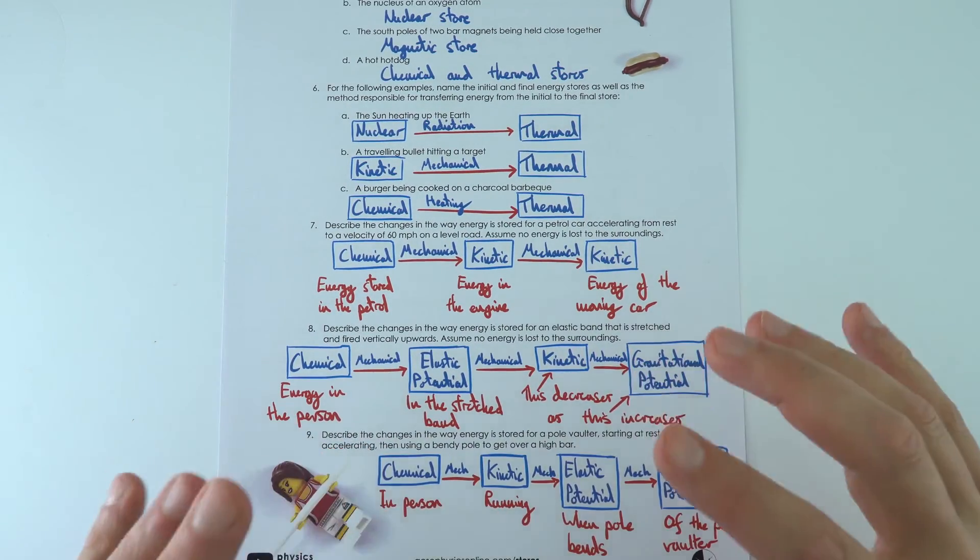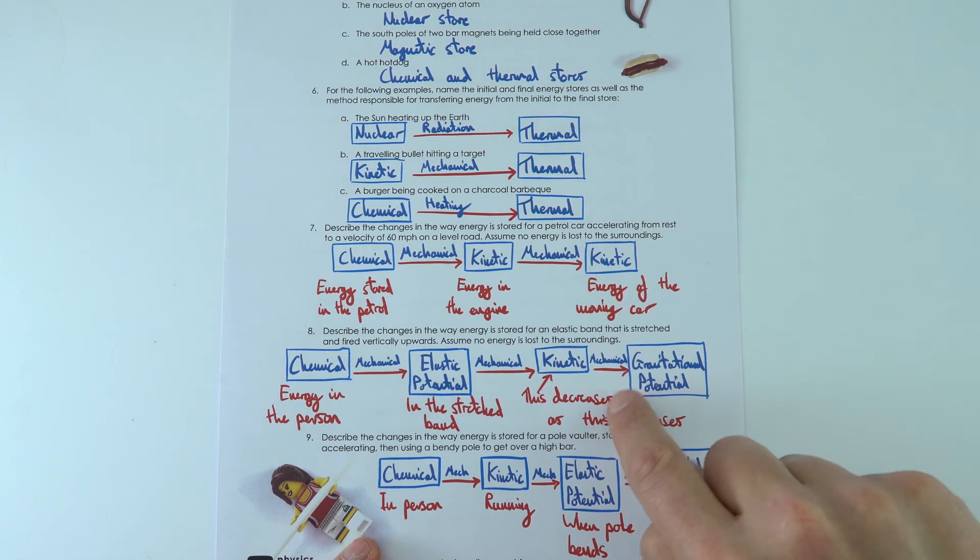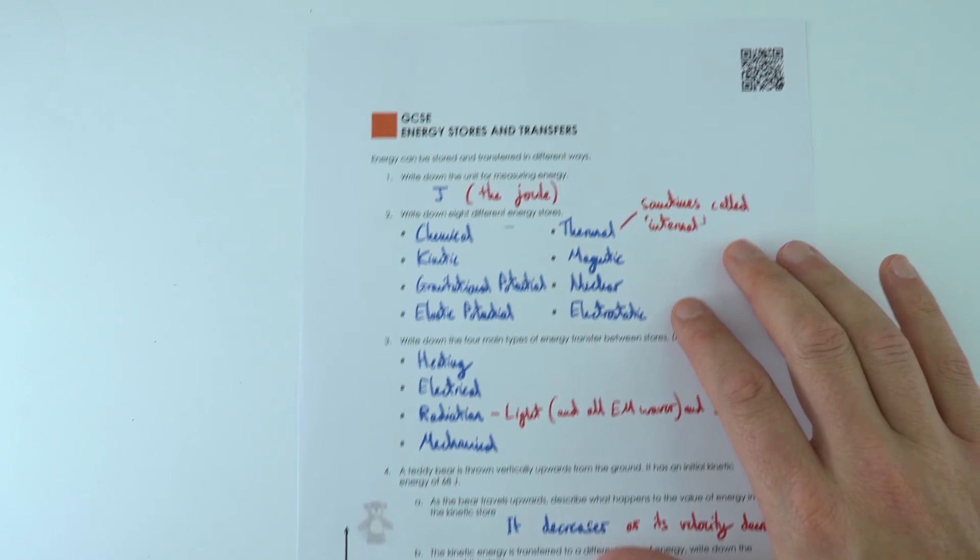So this one over here, it can get a bit confusing, but I just thought I'll keep it simple. I'll put my stores in boxes and my transfers with arrows to show some of the energy stores and transfers for the processes involved on that first worksheet.